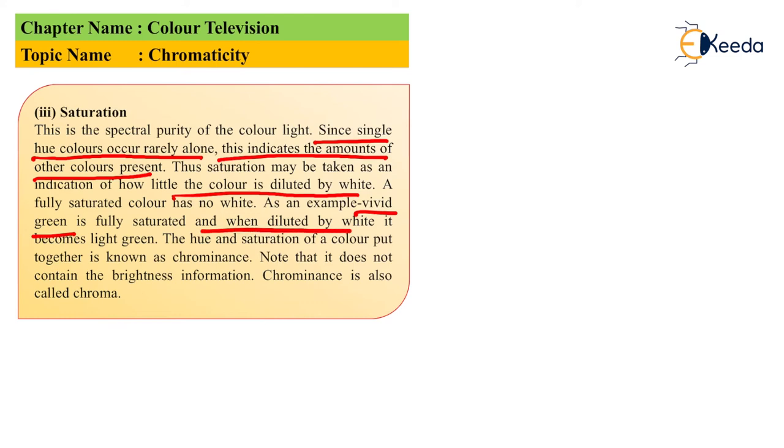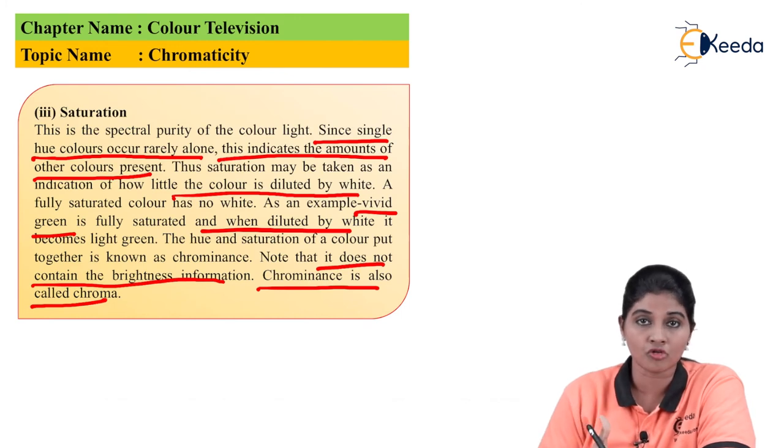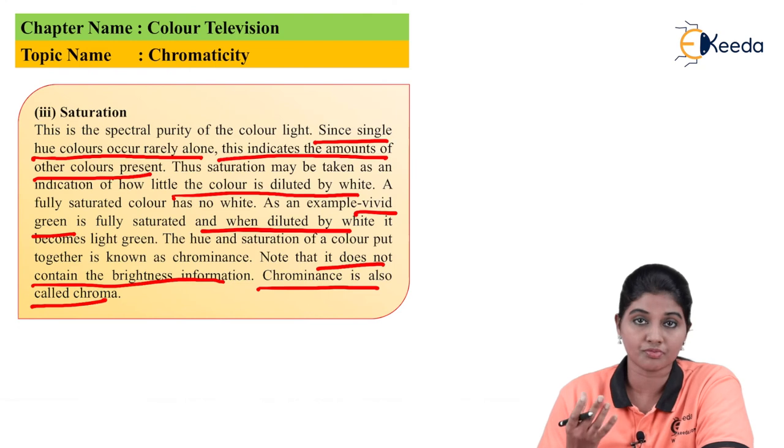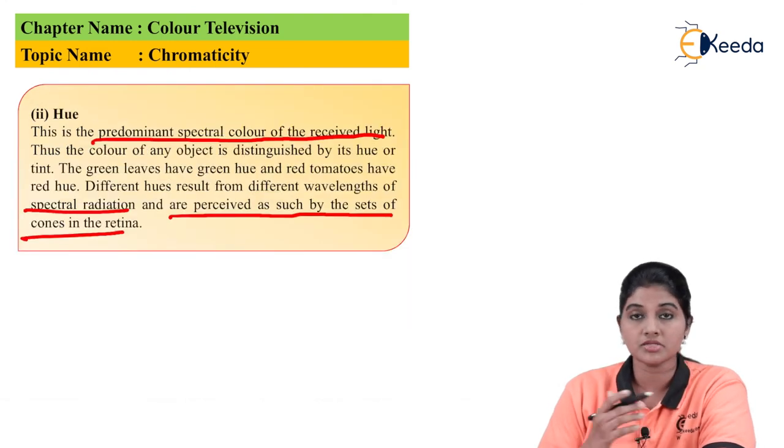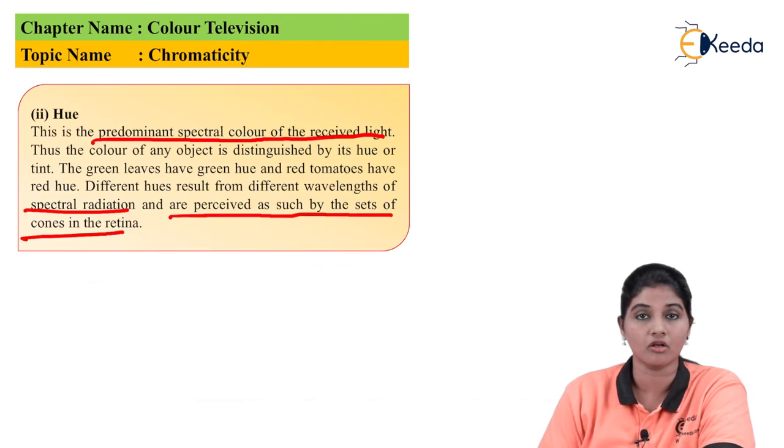The hue and saturation together form a term called chrominance or chroma. It does not contain brightness information. Chrominance or chromaticity does not provide any information regarding the brightness of the signal, but it provides information regarding spectral purity and hue, which is the predominant spectral color of the light signal.